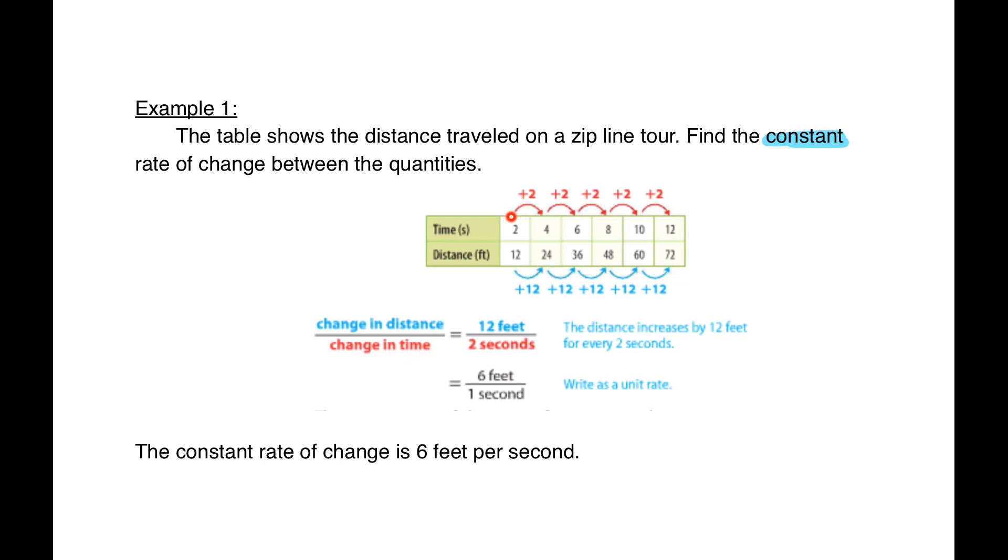The time goes from 2 to 4, 4 to 6, 6 to 8, 8 to 10, and 10 to 12, so it increases by 2 each time. The distance goes from 12 to 24, 24 to 36, 36 to 48, 48 to 60, and 60 to 72, so we add 12 each time.